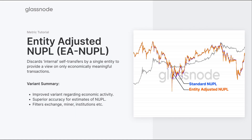The first key variant of the net unrealized profit and loss is the entity-adjusted metric. It discards internal or self-transfers between the same entity, providing a view of the more economically meaningful transactions — filtering out self-spends, relay transactions, and internal wallet management by exchanges, miners, or institutions. This gives an improved view of economic activity and superior accuracy for estimating actual profit or loss held across the market.